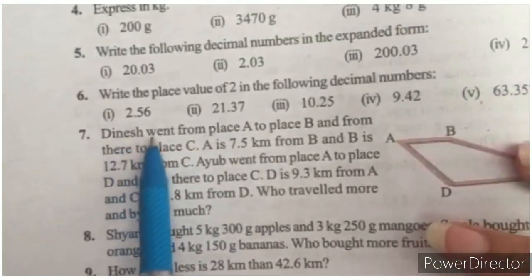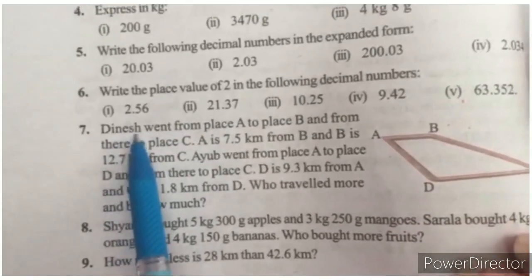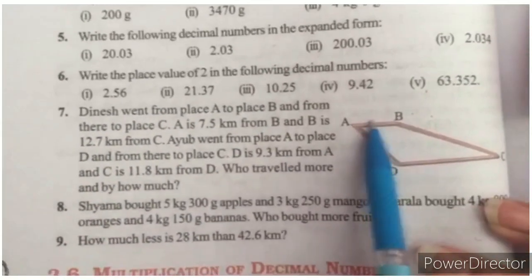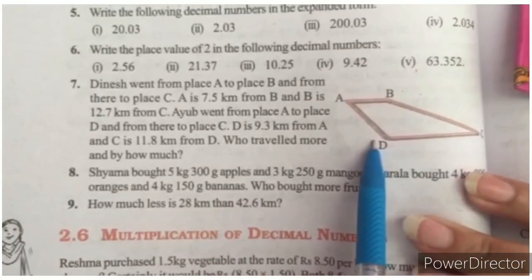Okay, just see question number 7. There are two students, two boys in question number 7. Dinesh and Ayub. And there is a quadrilateral. They are moving around this path.